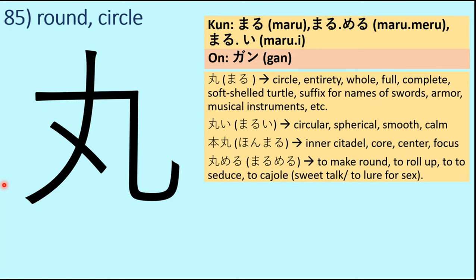Then we have honmaru, which is the inner citadel, core, center, or focus — the central core circle. Because hon means root, it refers to the innermost part. Then we have marumeru, meaning to make round or to roll up. Another meaning is seduction — that is, to seduce or coax someone using sweet talk. In Japanese, marumeru is used in this sense as well.